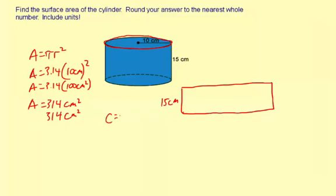And the circumference is 2πr. So that's this distance here. Now we know the radius is 10 centimeters, so we can figure this out pretty easily.